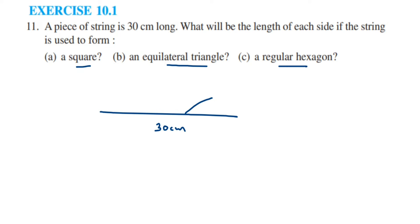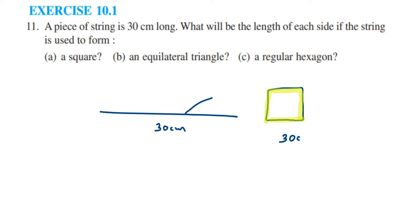No piece of string is removed or added, so the string length remains the same. Since the string is 30 cm and they have made a square out of it, the length I am marking with yellow is 30 cm. They have not added or removed any string, so this is nothing but the perimeter. Therefore, the perimeter of the square becomes 30 cm.